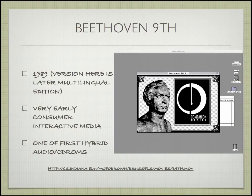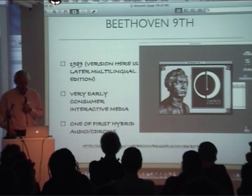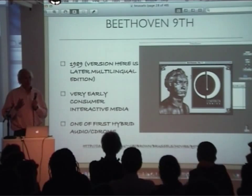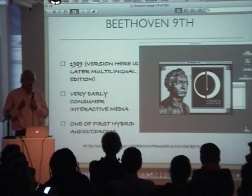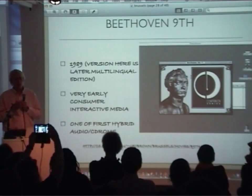Beethoven's Ninth was an early CD-ROM that was interactive, from 1989. You could play the Ninth Symphony, but you could also skip to various sections and look at the actual score. It would talk about how the harmonies worked, so it was a very interesting thing for exploring this music. It also turned out it was one of a modest number of CDs that were considered hybrid — they had both audio components and data components.